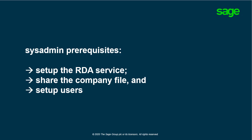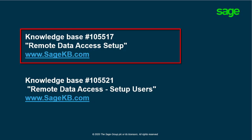Prerequisites: It's necessary for the SysAdmin or data owner to set up the Remote Data Access service, share the company file, and set up users before using Remote Data Access, as outlined in this video. Remote Data Access setup steps are outlined in the video entitled Remote Data Access Setup, Share Company, which can be accessed from the notes section below this video, or via Knowledge Base Article Number 105517, Remote Data Access Setup.